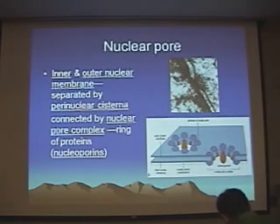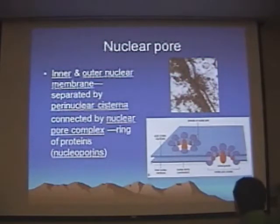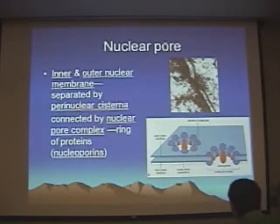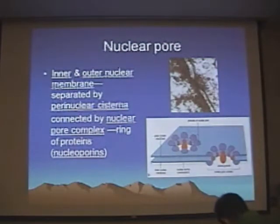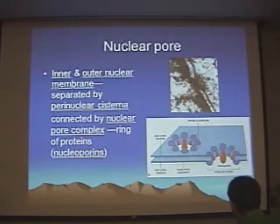The nuclear membrane has some very specialized structures which the plasma membrane does not. There's a lot of communication between the nucleoplasm and the cytoplasm, and that communication is through these openings — these nuclear pores — which don't show up very well in EM, but we can diagram them. These nuclear pores are actually made up of rings of protein molecules which form these openings or channels between the cytoplasm and the nucleoplasm. The particular molecules that make up these nuclear pores are cleverly called nucleoporins.